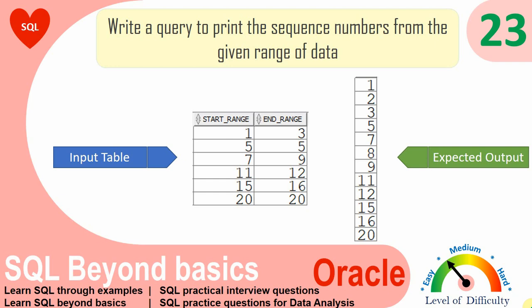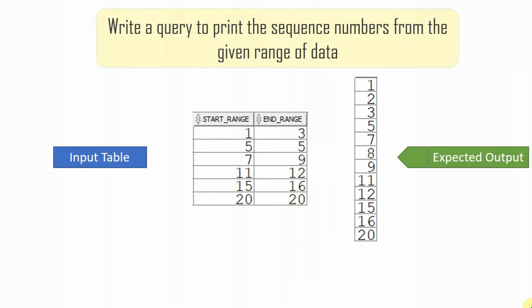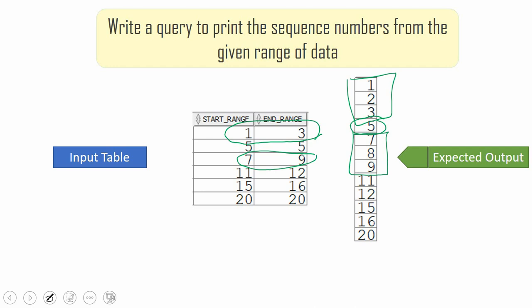Here is another interesting question. We are given a range of values and based on the range we need to print the sequence of numbers. For example, the start range and end range is from 1 to 3, so we need to print from 1 till 3. The next range is from 5 to 5, we need to print 5. The next range is 7 to 9, we need to print from 7 to 9. This is the expectation.